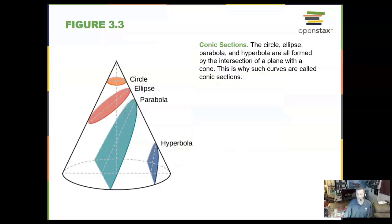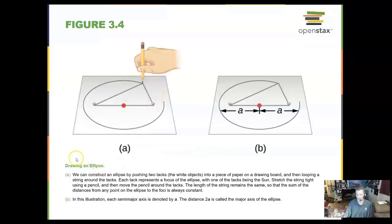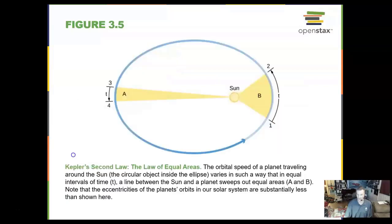One of these laws states that the orbit of a planet must be an ellipse. You can draw an ellipse using two thumbtacks, a pencil, and a piece of string, tying it all together to draw out a nice oval or ellipse.